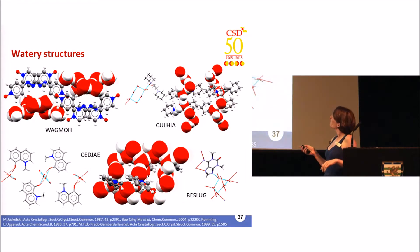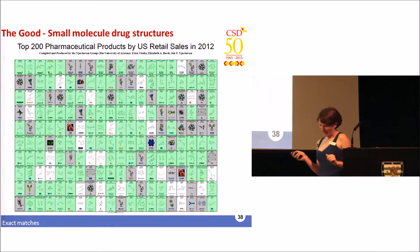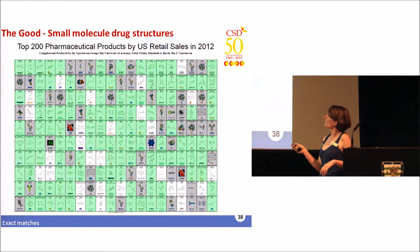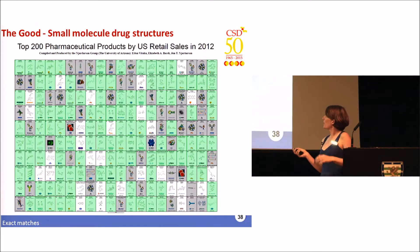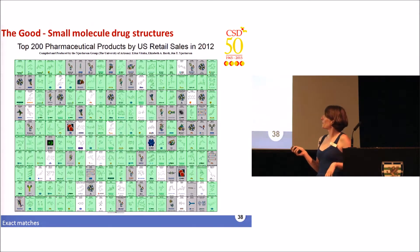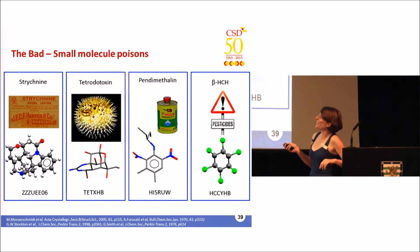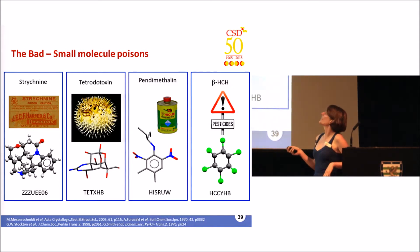One thing that has started to level off is the percentage of hydrate structures in the CSD — we're now getting about a third of structures as hydrates. Some structures obviously contain many more water molecules than others, and these are some of my favorite 'watery' structures. We could also look at the CSD from a completely different angle — examining drug molecules. This poster shows the top 200 drug molecules, with green corresponding to structures in the CSD and gray to PDB structures. We really do have fantastic coverage of pharmaceutical molecules in the CSD.